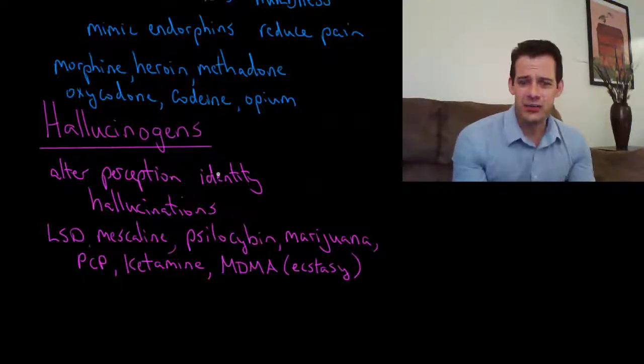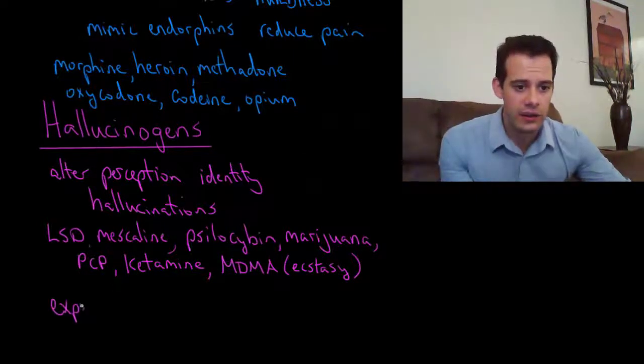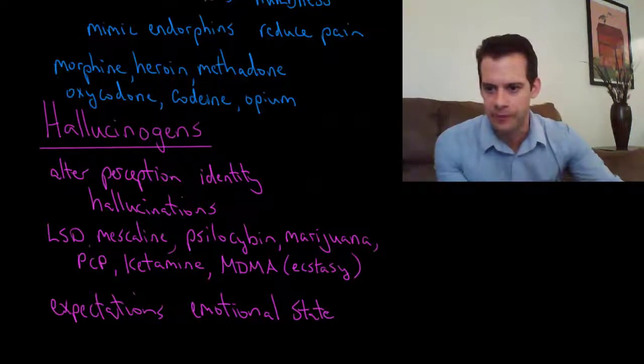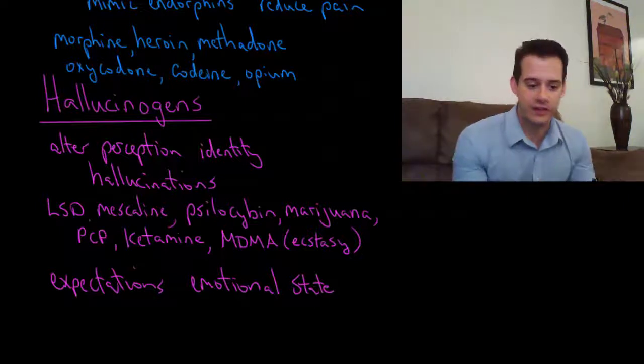The effects of hallucinogens are a little bit less predictable, and this is because they seem to have a strong relationship with people's expectations and their emotional state. They don't have the same types of predictable effects on the nervous system that we see with stimulants or depressants, partly because they're altering perception. So they're going to be more influenced by the expectations the person has and the situation that they're in.